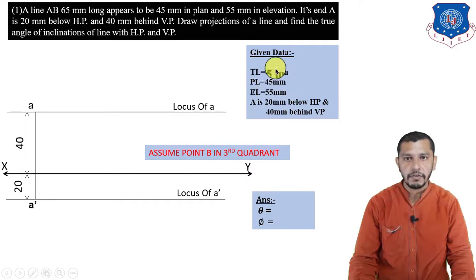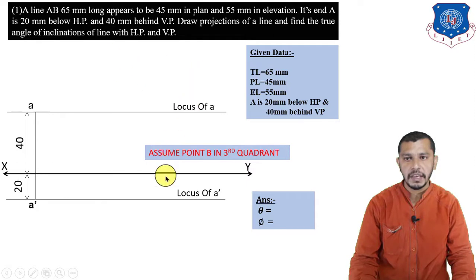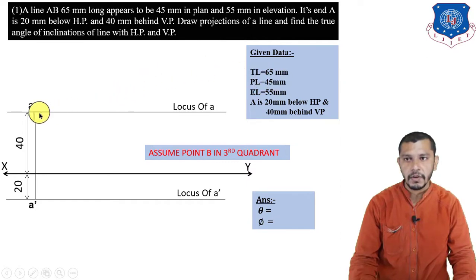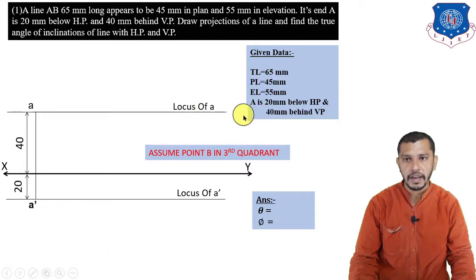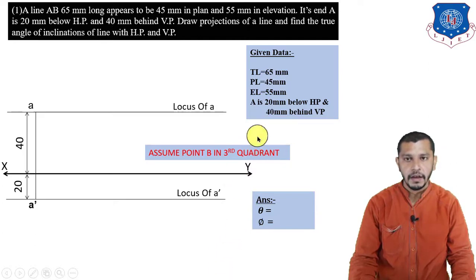Now we have the true length, plan length, and elevation length as given data. True length is 65mm. To draw true length, theta and phi are required, or locus of B-dash is required — neither is given, so we cannot draw the true length yet. To draw plan length from A, we need the beta angle or locus of B — also not given. Elevation length is 55mm, but to draw it from A-dash, alpha or locus of B-dash is required — also not given.